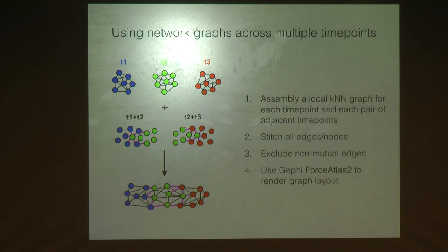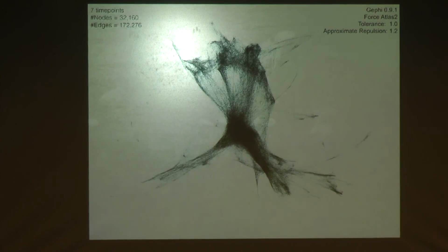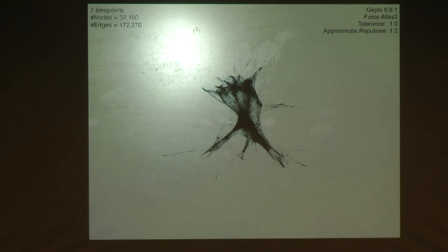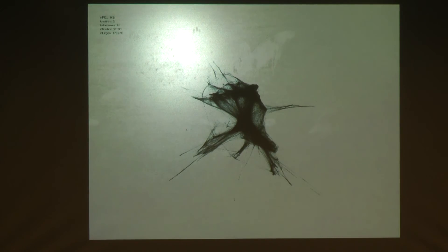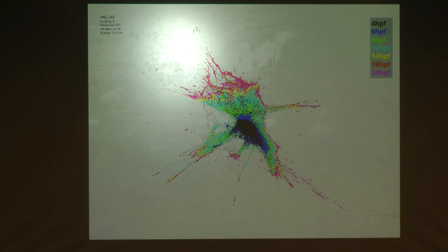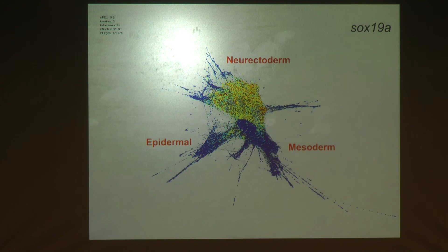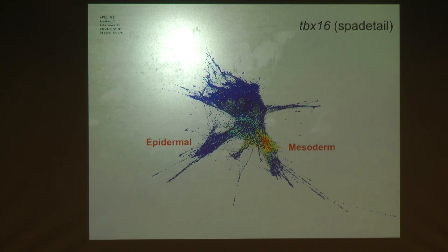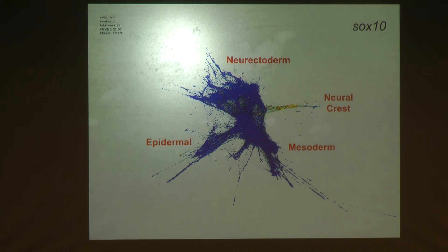After stitching this all together and excluding non-mutual edges, we can use a similar force-directed layout to look at the graph. This is what happens if I apply that approach to the zebrafish data — all seven time points, about 32,000 cells together. You can see it collapses the data and forms something looking like a tree. Going back and looking at time points, the early time points are at the very center, fanning and radiating out as time goes forward into several different branches. We can start to explore this tree using well-established marker genes for mesoderm, endoderm, and the different germ layers, convincing ourselves that these branches do correspond to sound predictions of germ layer and lineage segregation.